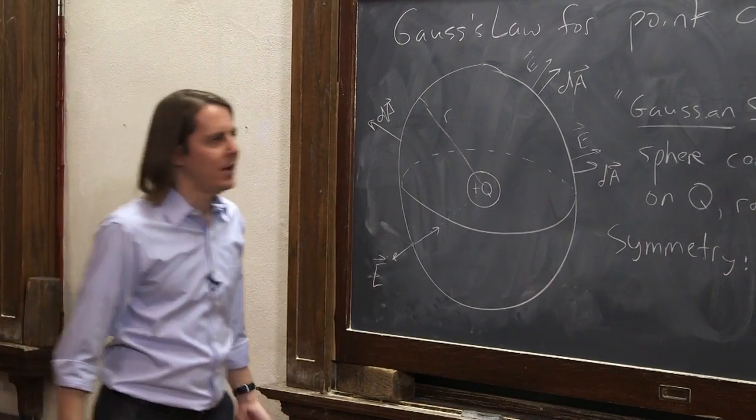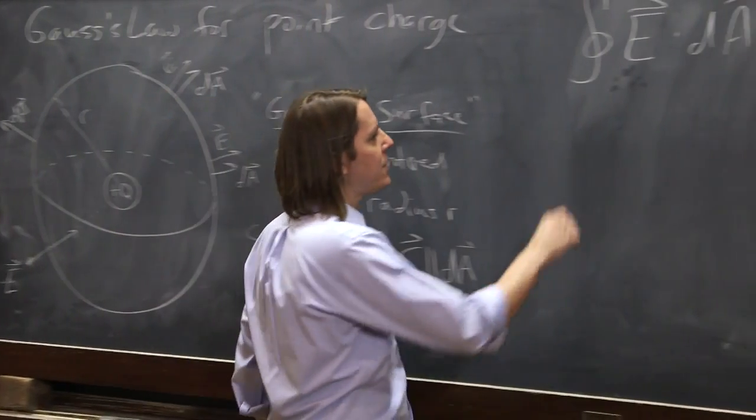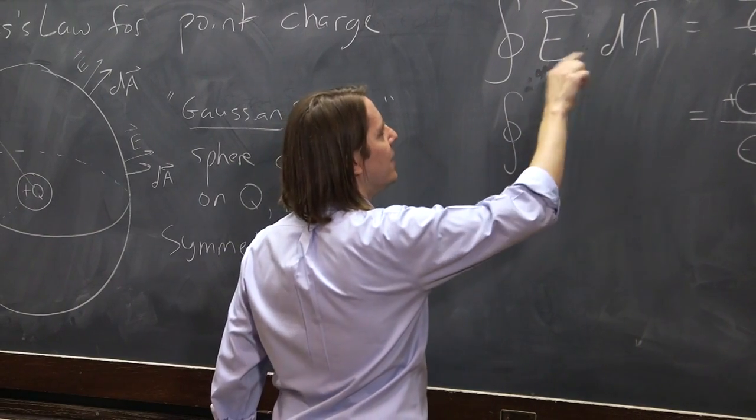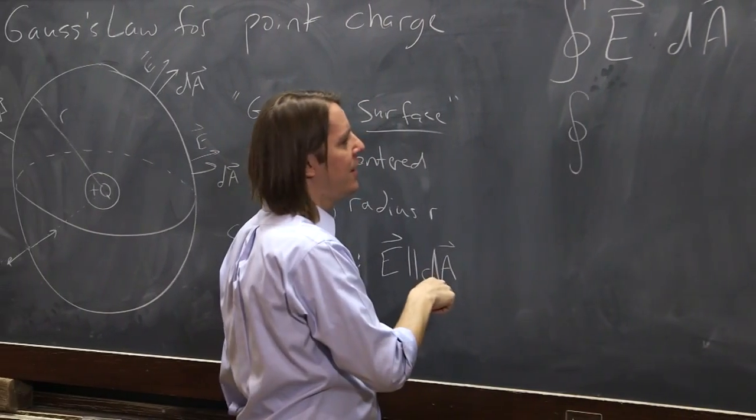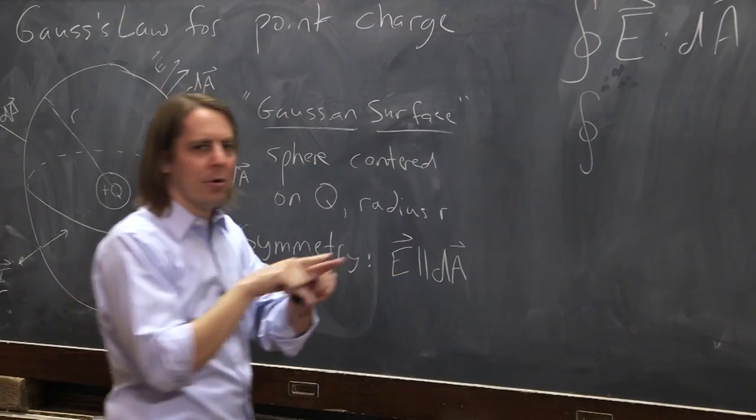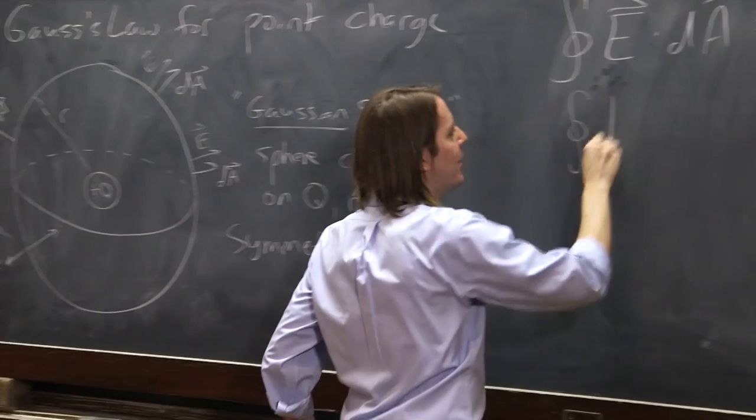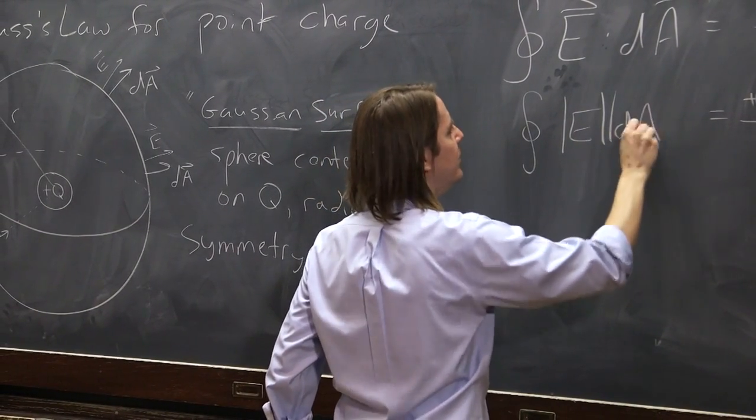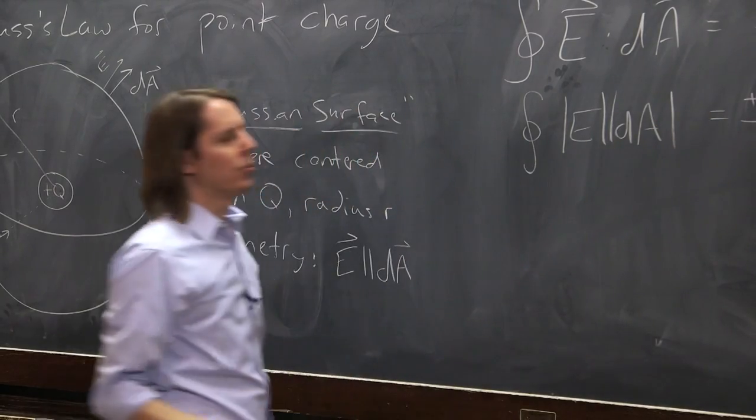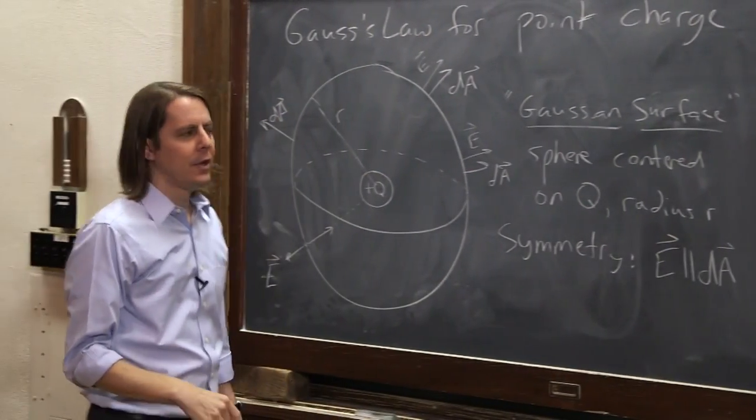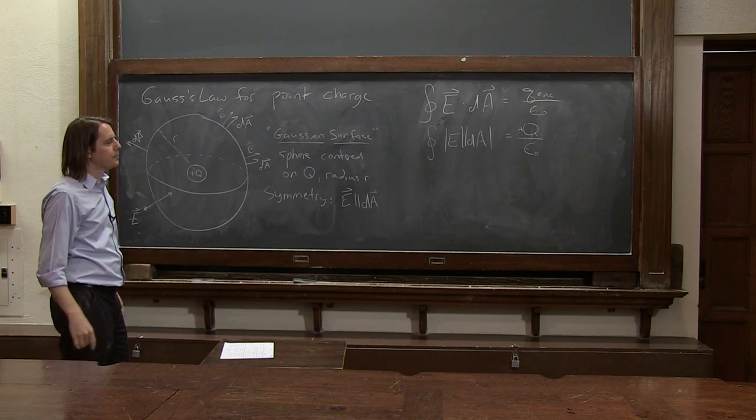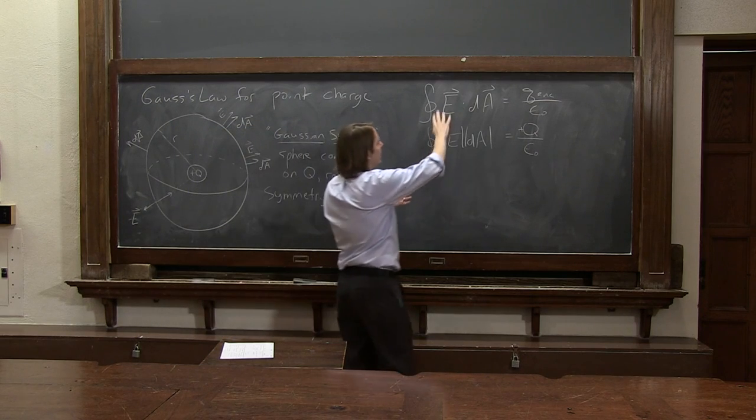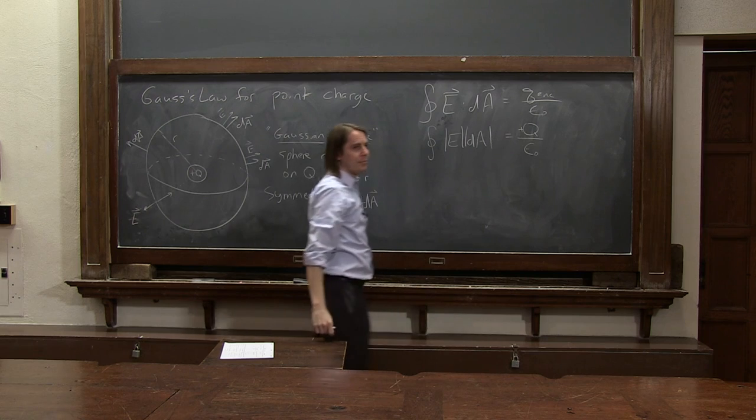That rule lets us simplify the integral. Since E is parallel to DA, the angle between them is zero and cosine of zero is one. We're talking about their magnitudes: magnitude of E times magnitude of DA. We've used symmetry and the parallel relationship to eliminate the dot product.